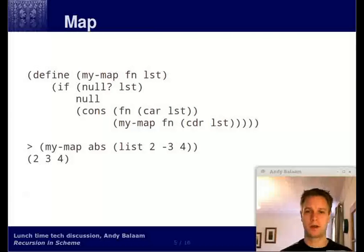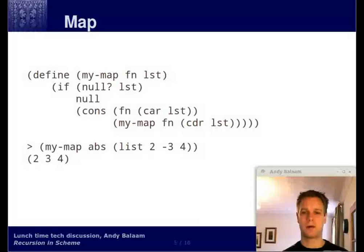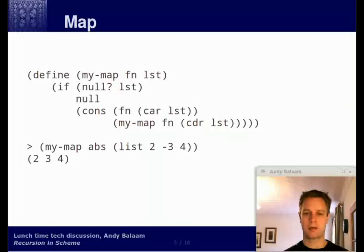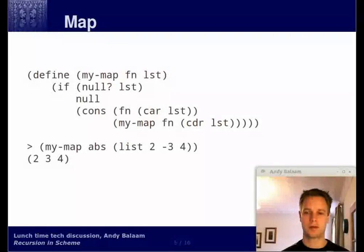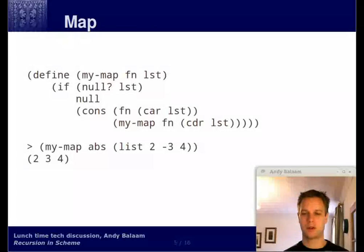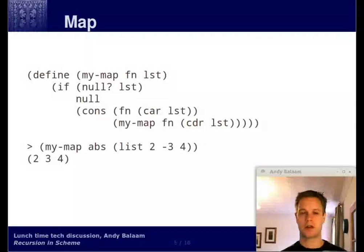Let's talk about the map function. Map is a built-in function in Scheme, but we're going to talk about how you might implement map to understand how you would implement more complicated recursive functions. If you look at the bottom, you can see how this myMap function works. If we call myMap passing the function abs — which returns the absolute value, the positivized version of a number — and the second argument is a list of 2, minus 3, and 4, what we get back is another list containing 2, 3, and 4. The abs function has been applied to everything in the list.